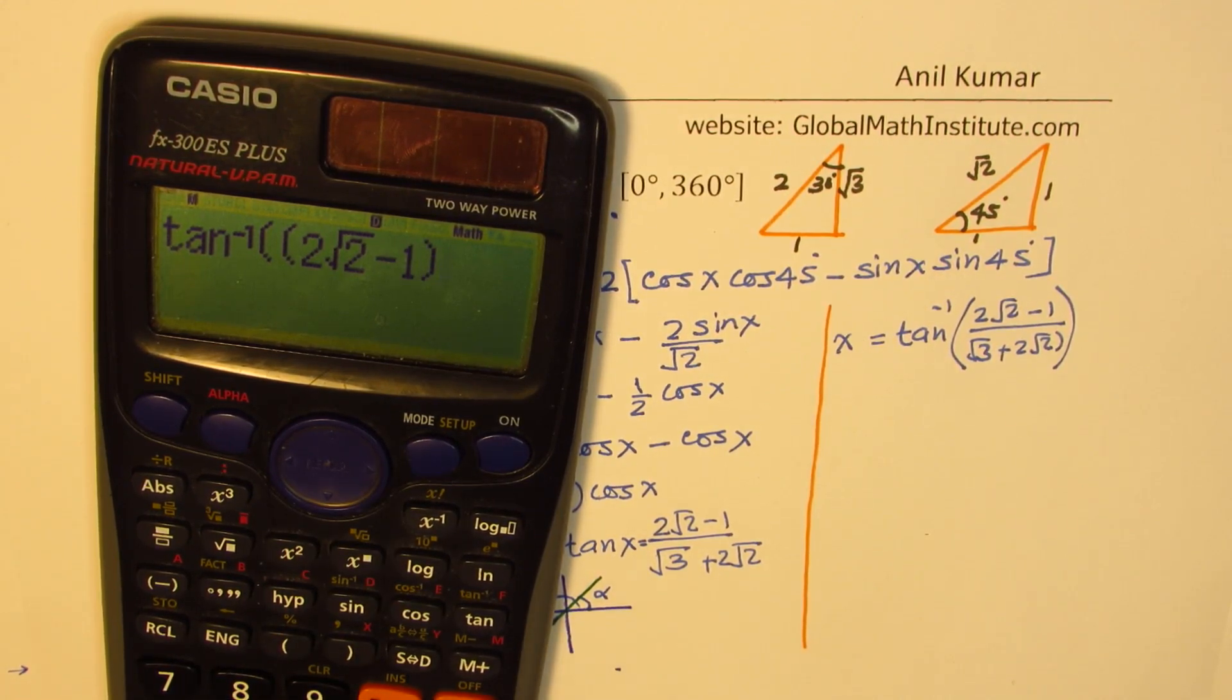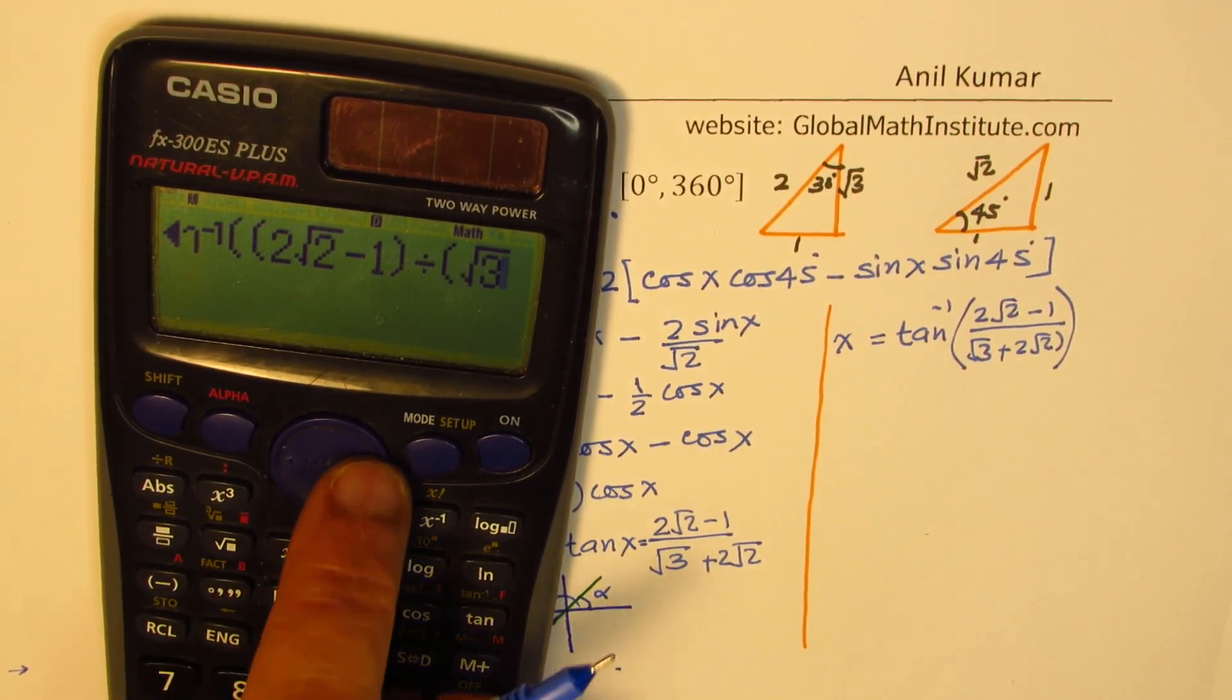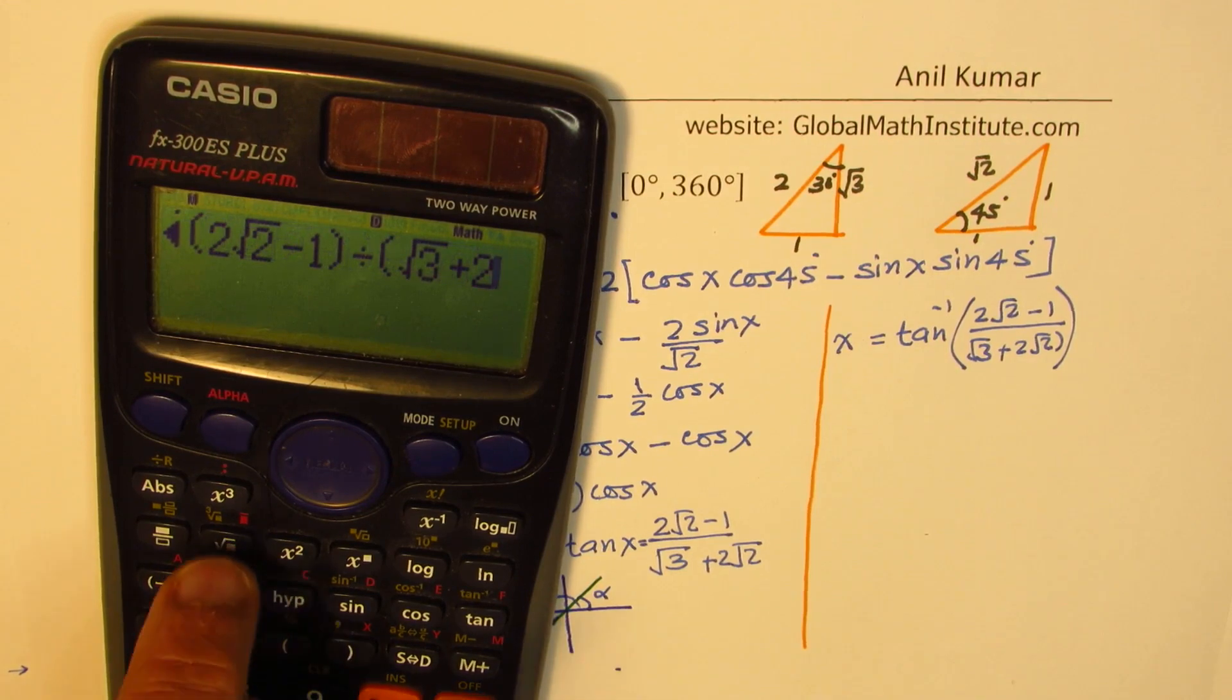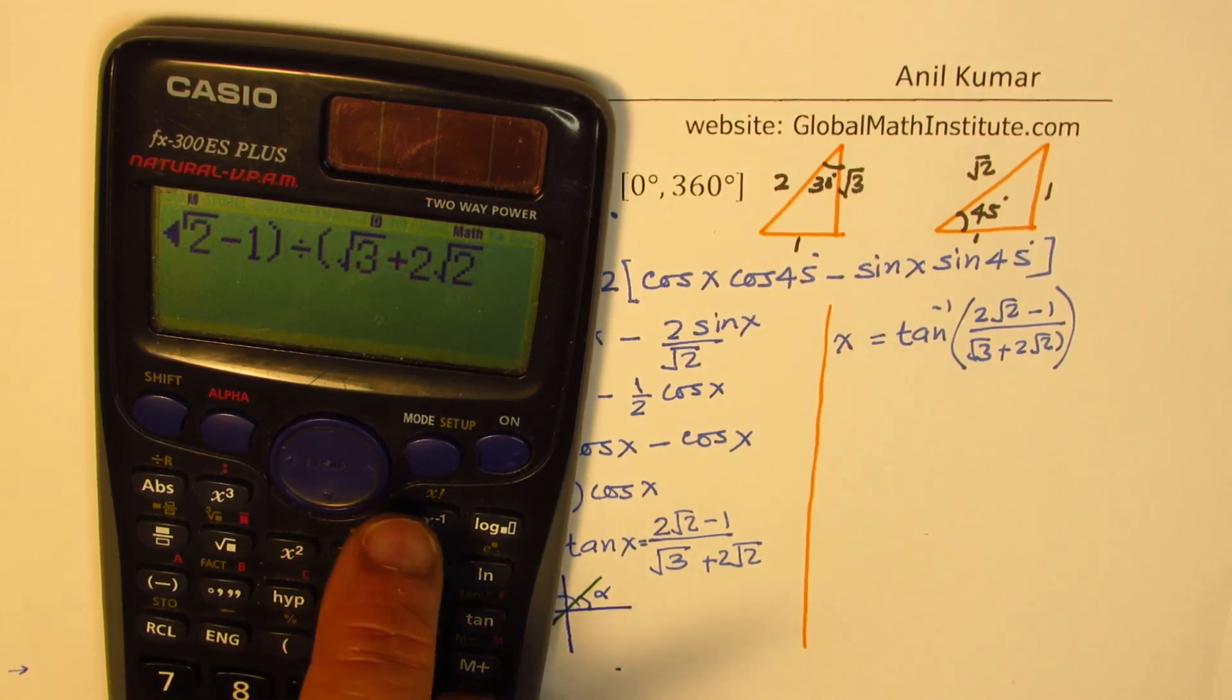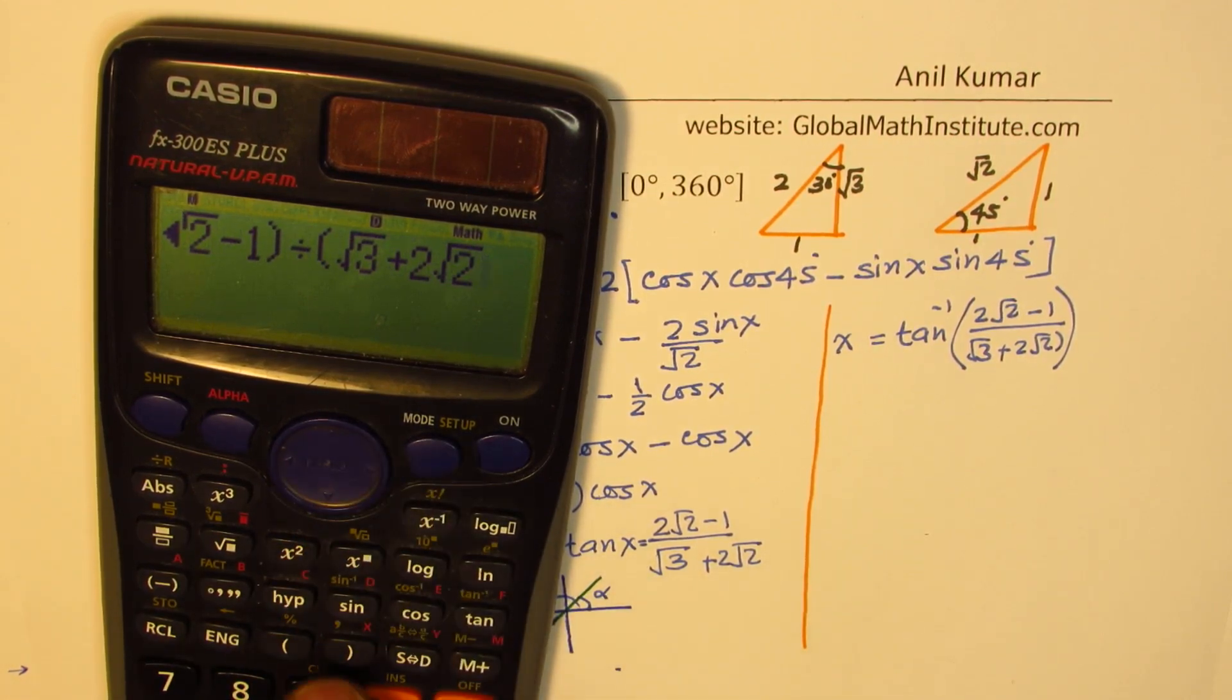Divided by, within brackets, we'll write √3 + 2√2. Okay, and then bracket close, 2 brackets close. Equals to what?